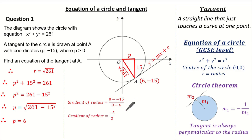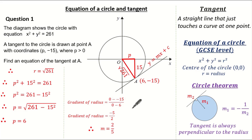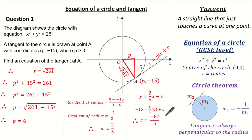We work out the gradient of the radius to be minus 5 over 2. Remember the gradient of the tangent will be the negative reciprocal, so the gradient of the tangent is 2 over 5. Substituting into y equals mx plus c, with gradient 2 over 5, x coordinate 6, and y coordinate minus 15, I can solve for c to get minus 87 over 5. Therefore the equation of the tangent at point A is y equals 2 over 5 x subtract 87 over 5.